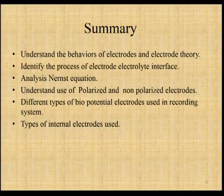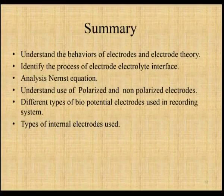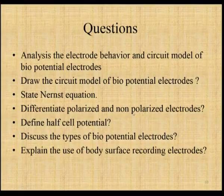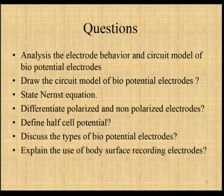In summary, from this lecture we can understand the theory of the electrode, the working formation of the electrode-electrolyte interface, the Nernst equation, and the difference between polarized and non-polarized electrodes. The basic three types of electrodes are micro electrodes, surface electrodes, and needle electrodes. Students should be able to answer: analysis of electrode behavior and circuit model of biopotential electrodes; state the Nernst equation; differentiation between polarized and non-polarized electrodes; definition of half cell potential; types of biopotential electrodes used in recording setups; and uses of surface electrodes in recording. With this, we have come to the end of the session. Thank you.